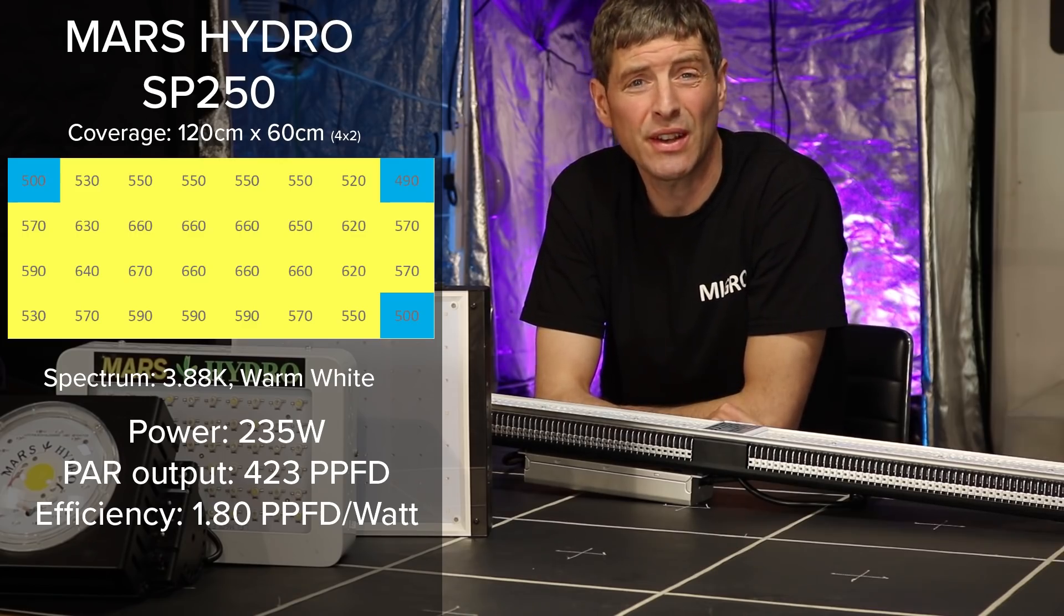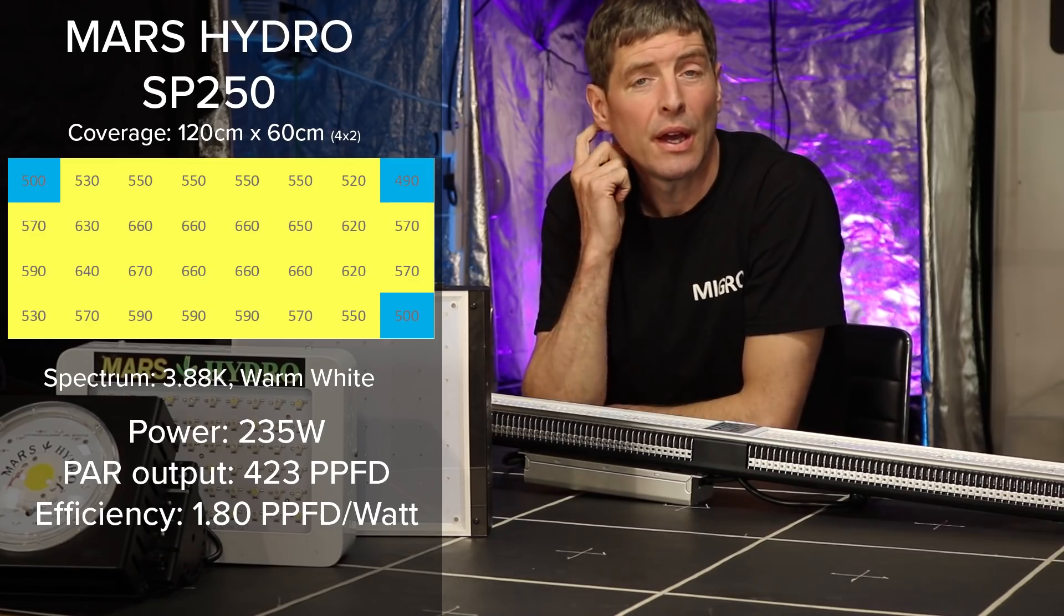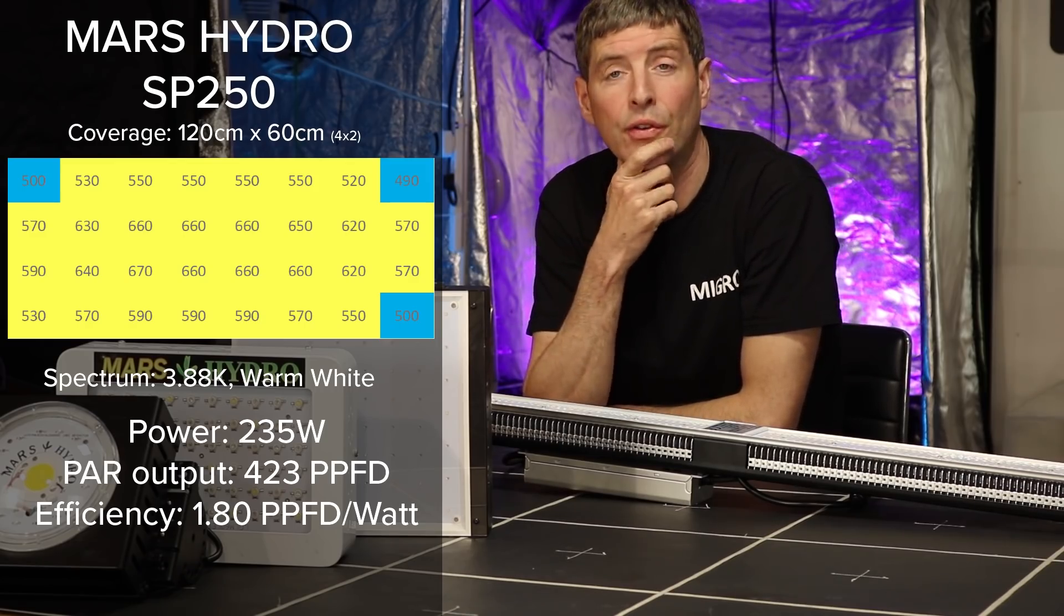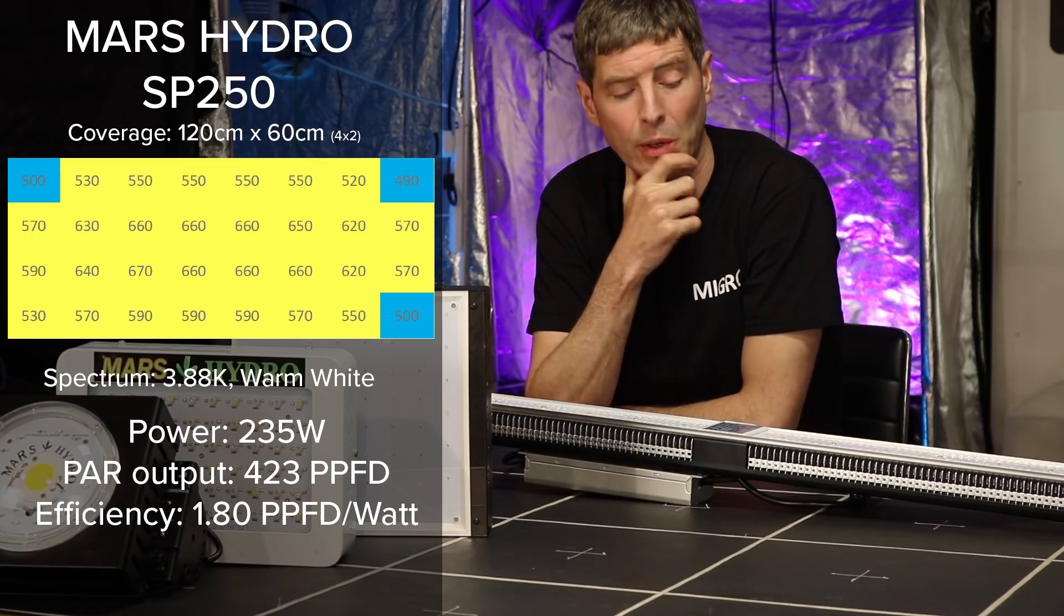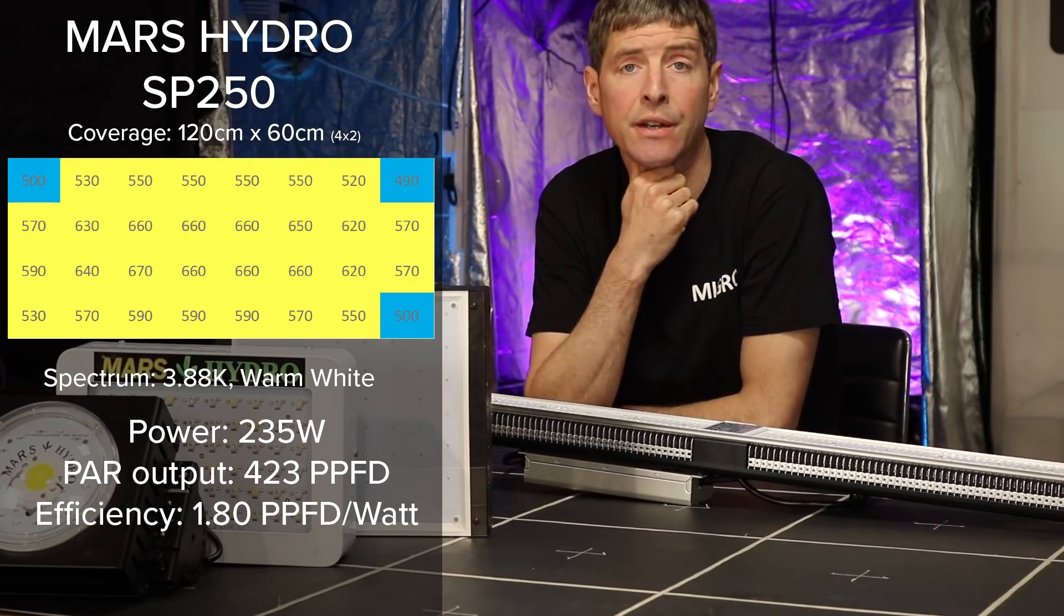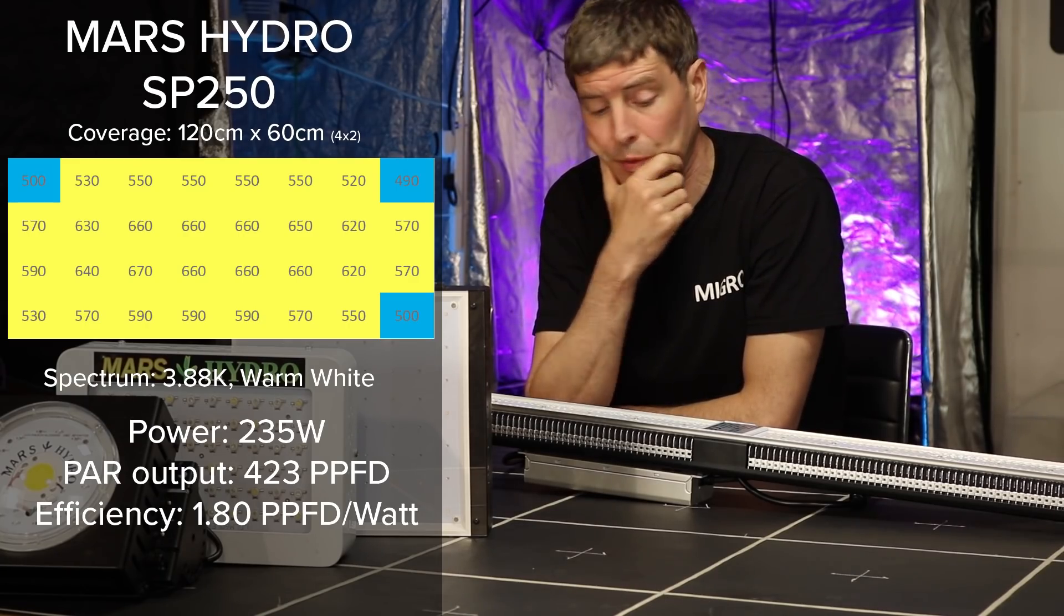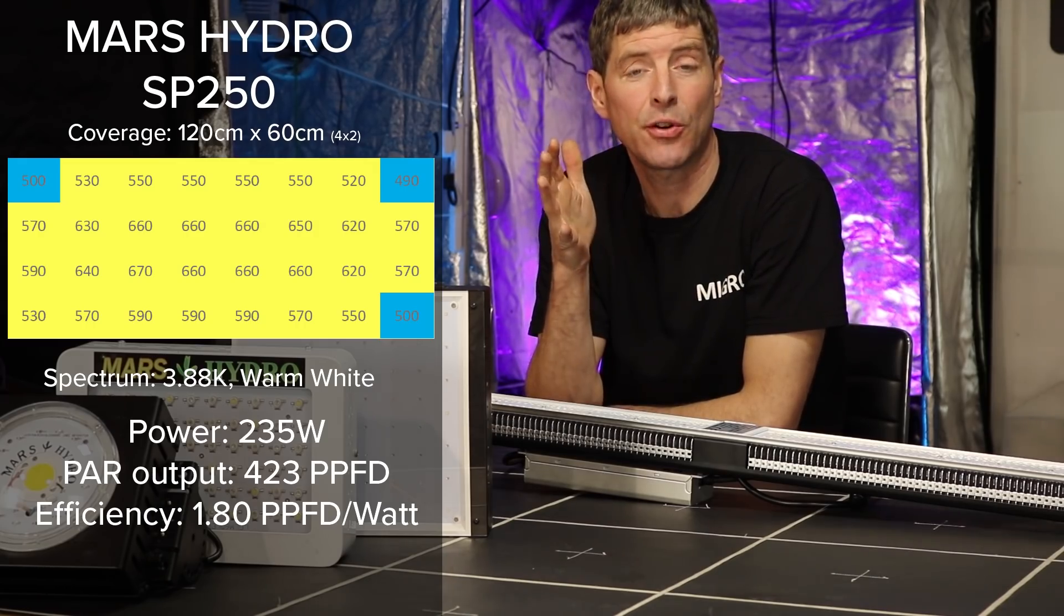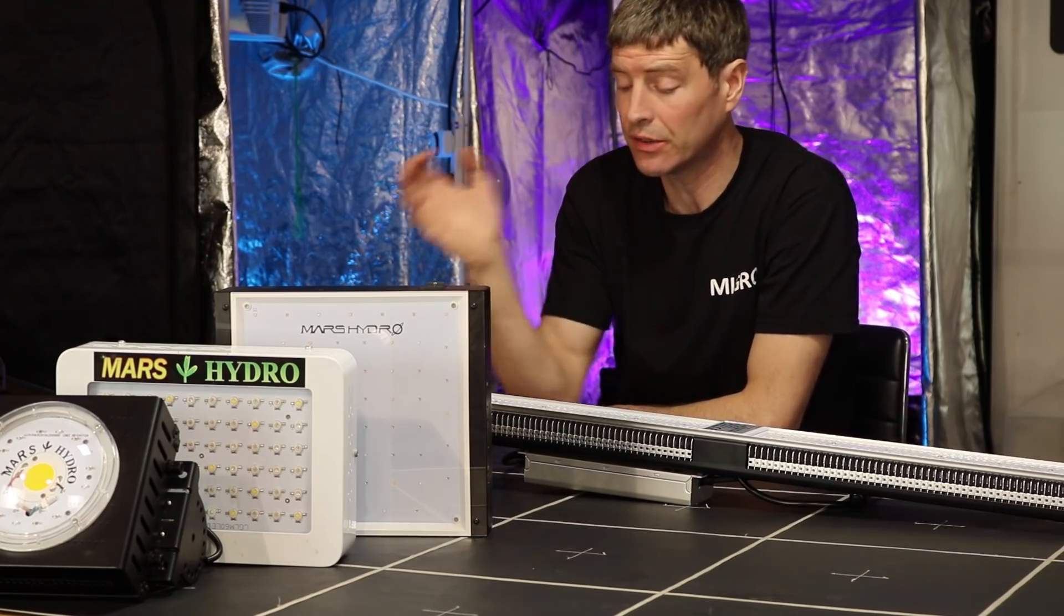It manages a 1.8 micromoles per watt efficiency. So that is 10% pretty much better than their Mars Hydro Cob, and it's starting to creep up on the higher efficiency fittings. You know, the 2.0 and above is where we get into high efficiency, and Mars Hydro is knocking on the door with this light. Despite a few little issues with it, it's excellent form. Really nice light. I just like it overall. I think it's a great idea.